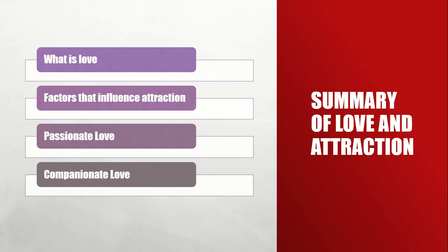In summary of love and attraction, we discussed what is love, the factors that influence attraction, and the two types of love — passionate love and companionate love. I hope you enjoyed the video and I hope it helped you. Have a great day.